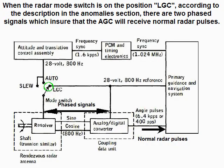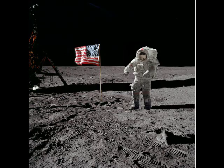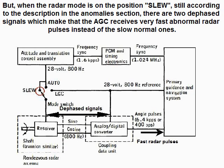When the radar mode switch is on the normal position, there are two phased signals which ensure that the AGC will receive normal radar pulses. But when the radar mode is on the anomalous position, there are two phased signals which make the AGC receive very fast abnormal radar pulses instead of the slow normal ones.